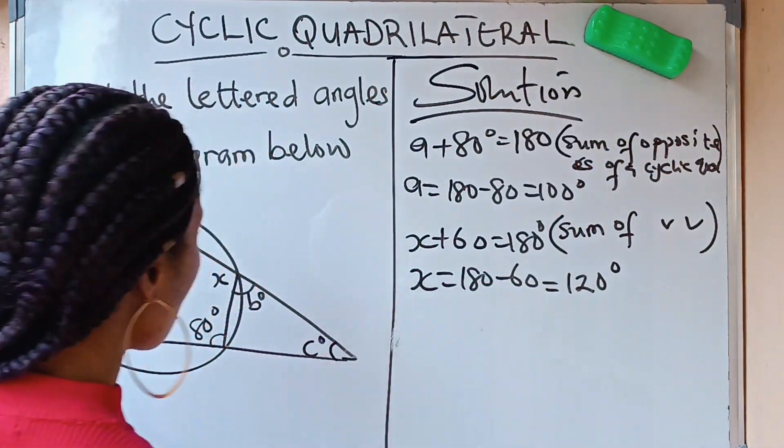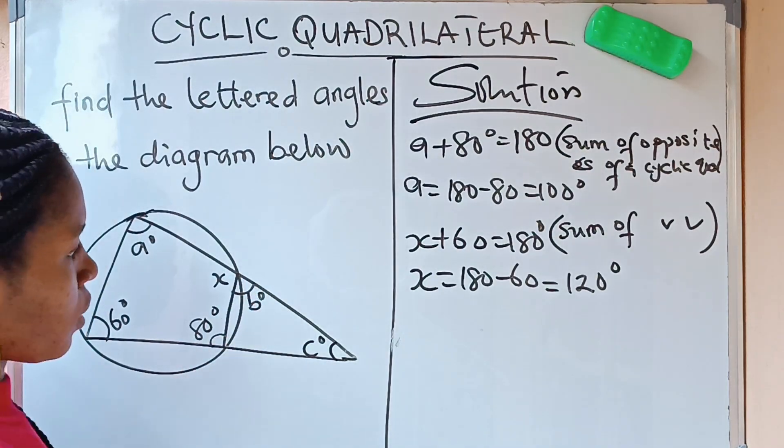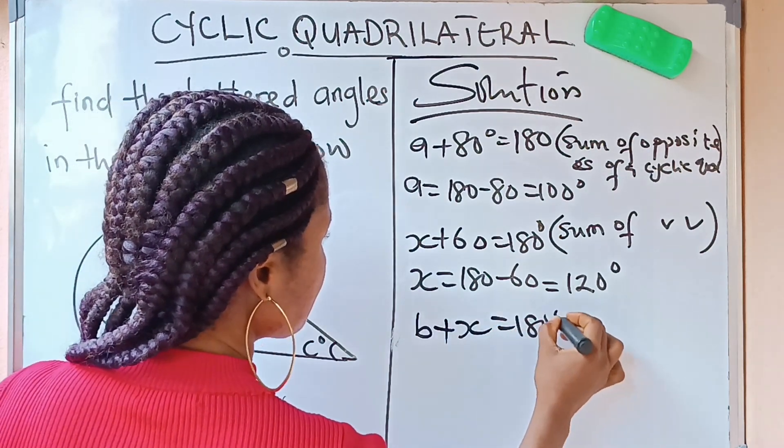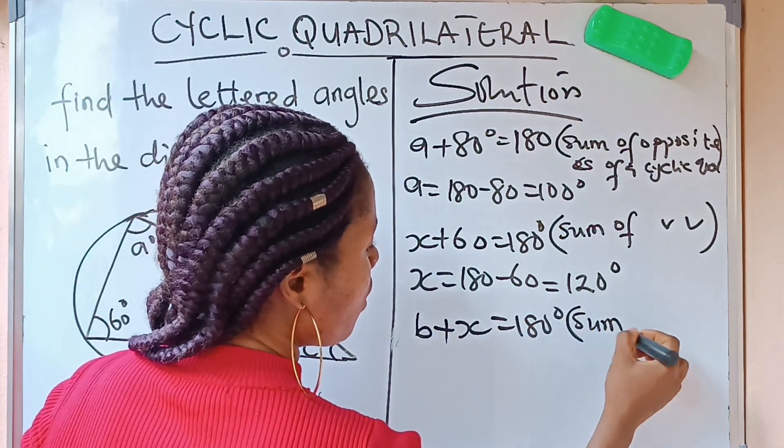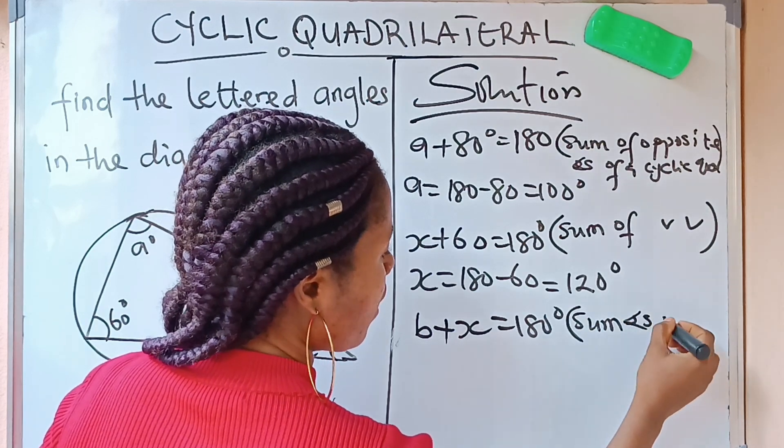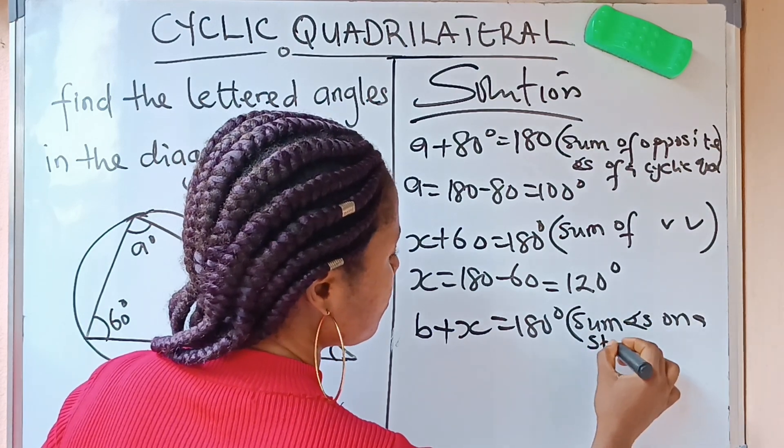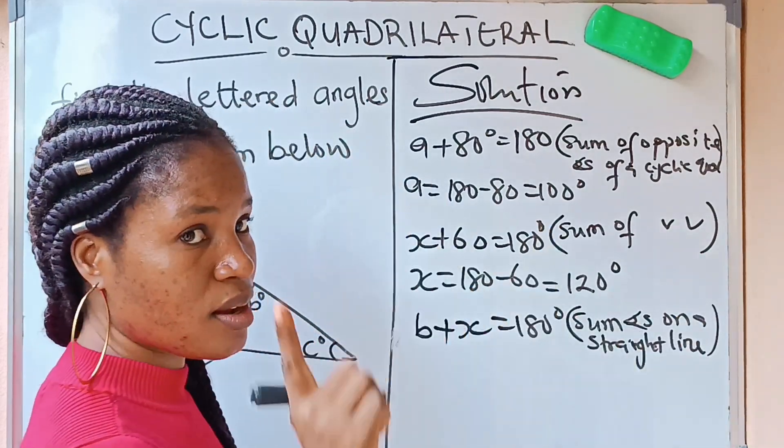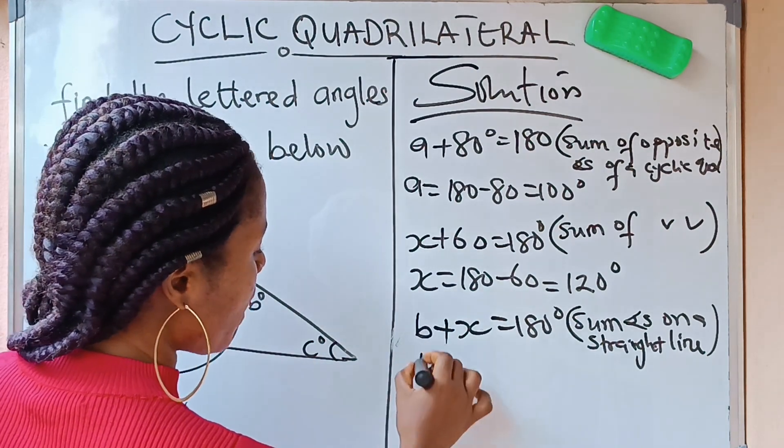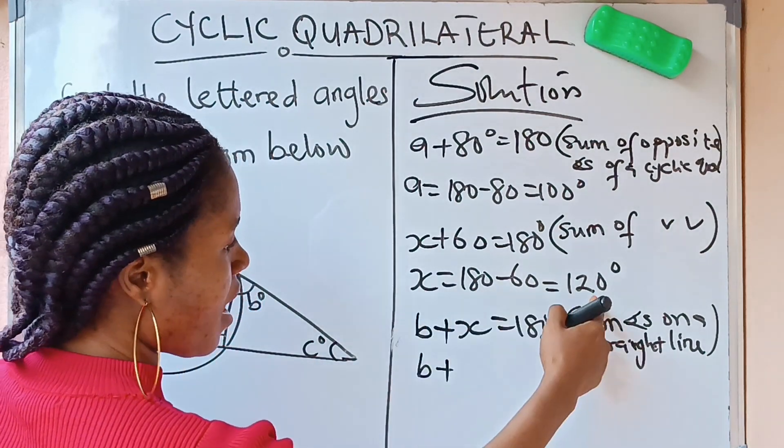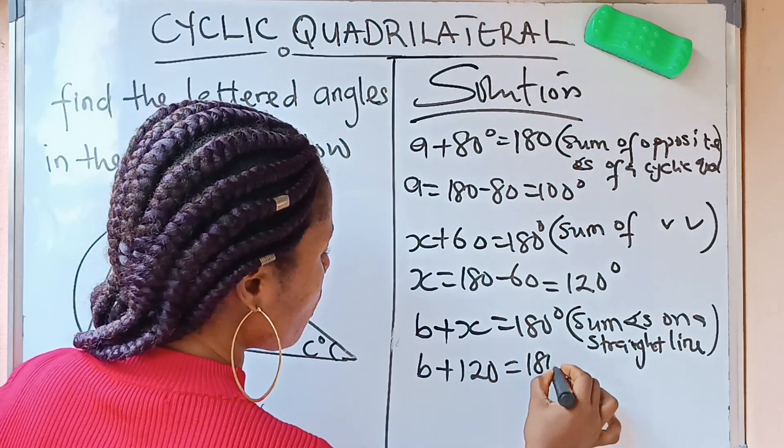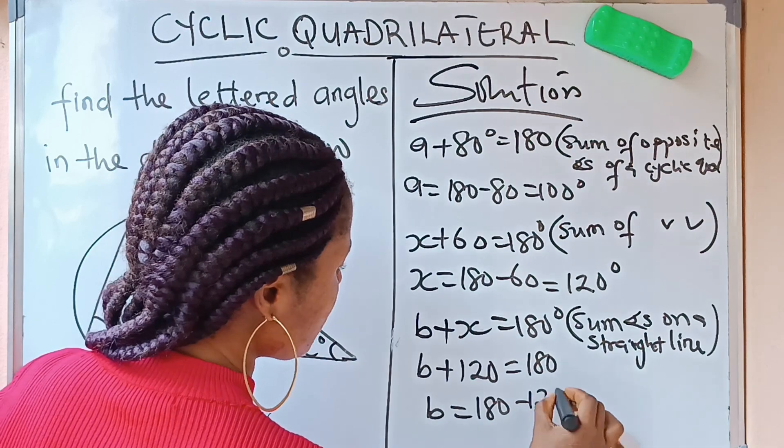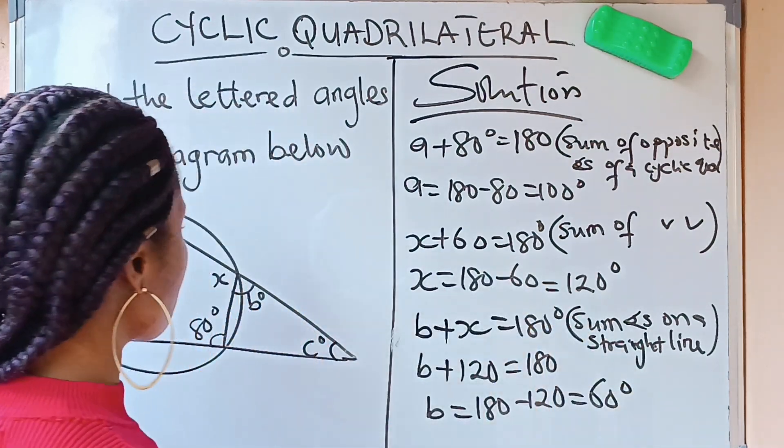So we are going to use it to find the value of our B. We are going to write that B plus X is equal to 180 degrees. Sum of angles on a straight line. We have gotten... We are looking for B plus... We have gotten our X to be 120 is equal to 180. It means that our B is 180 minus 120, which will give us 60 degrees.